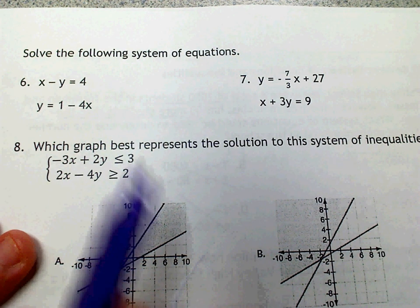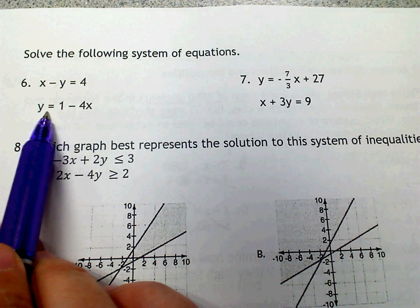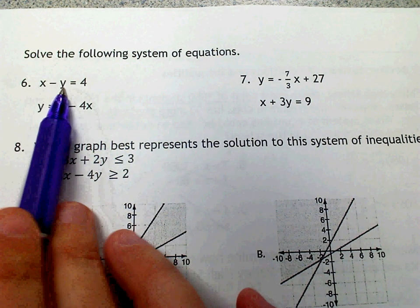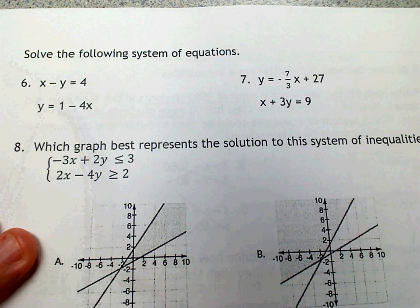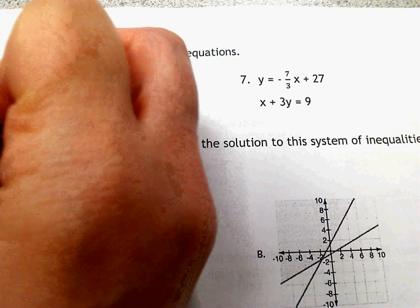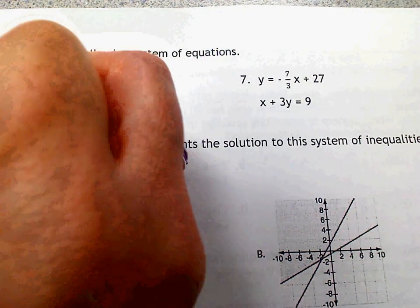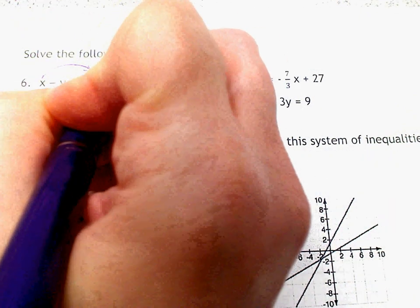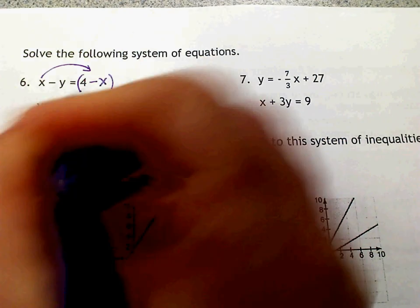You'll notice on both of these, one of them is already in y equals, the other one is not. So we'll need to do our shortcut to put this in y equals. After the equal sign, before the number, we put the parenthesis. Then we do the opposite of x, so the opposite of positive x is negative x. So 4 minus x, and then we divide by the number in front of y.